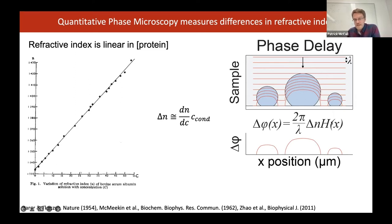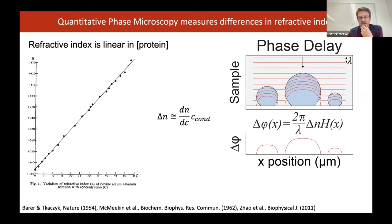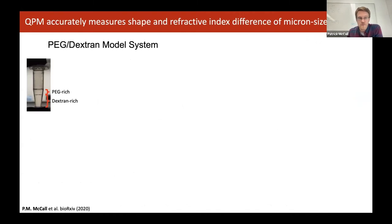There's a relationship between the phase shift in the image and the refractive index of the object and its projected height. Conveniently, for droplets in vitro when they interact with a cover glass, for droplets much less than about 30 microns in radius, their shape is excellently described as a sphere truncated by the cover glass. This means we can take quantitative phase images and fit them to a model of what their shape ought to be, and extract the refractive index difference by itself.